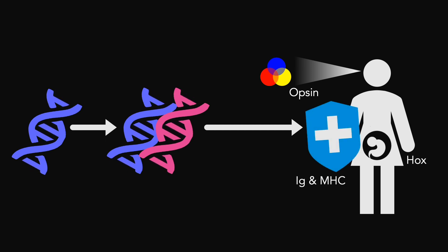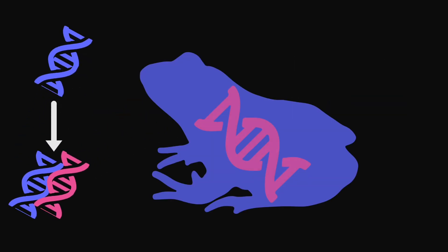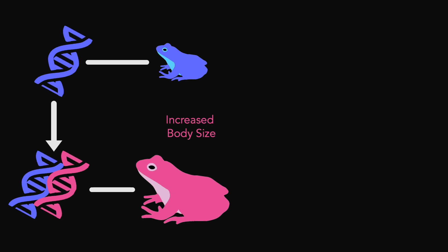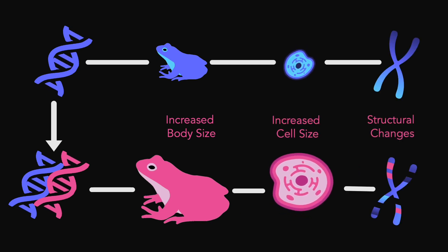However, in the short term, replicating an entire genome can have traumatic effects on genotype and phenotype, leading to enlarged body sizes, cell sizes, and structural changes across the genome.